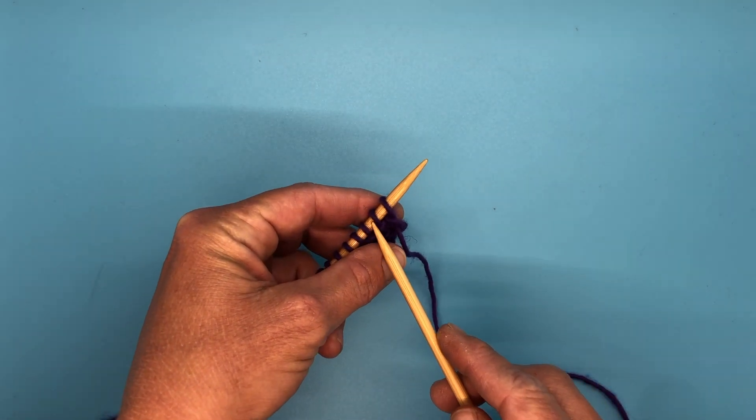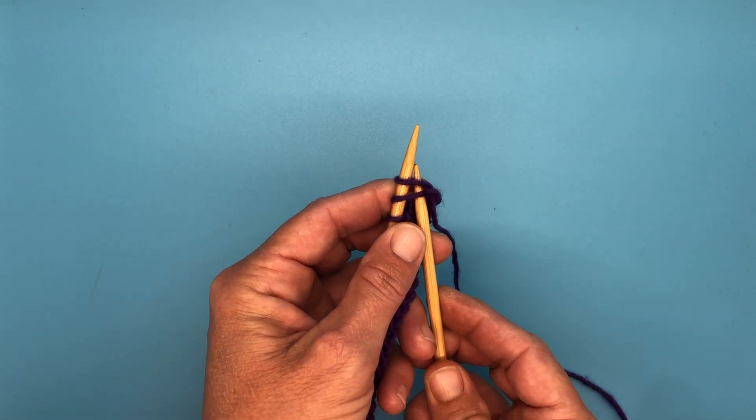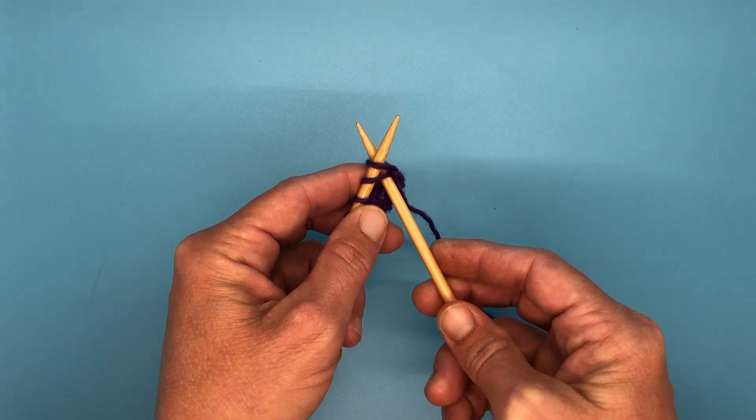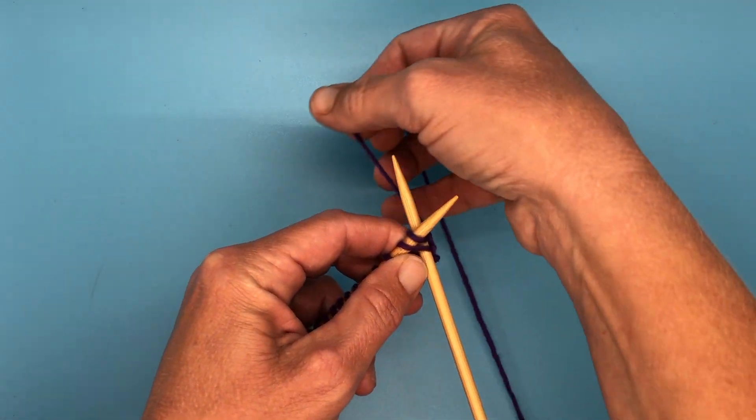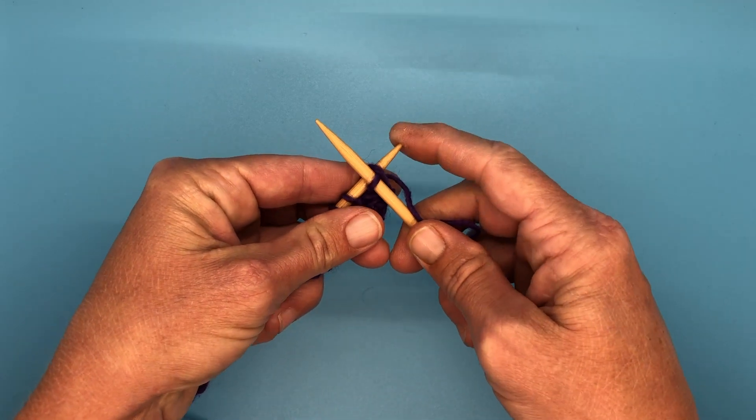So I'm going to slide underneath both of these first two stitches here and knit them together as one. It's that simple.